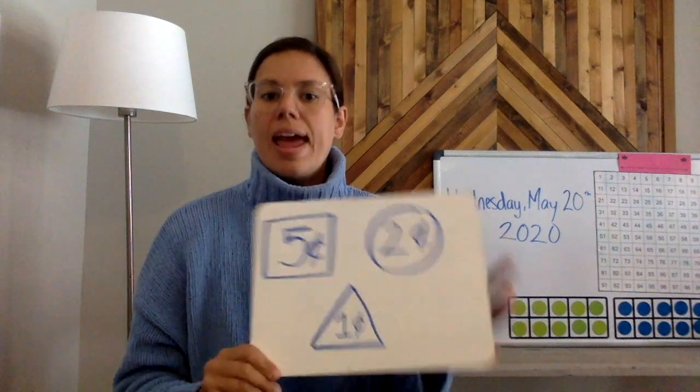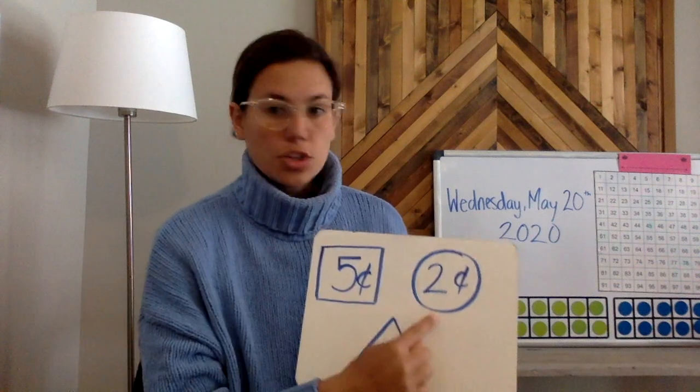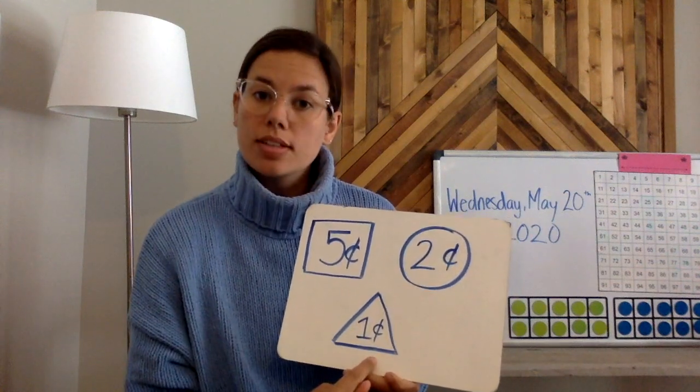So we've talked about money and the squares are going to be worth five cents, the circles are going to be worth two cents, and the triangles are going to be worth one cent.